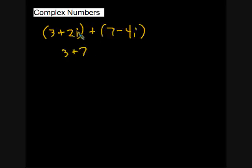And then we'll add the imaginary part plus the imaginary part. So that'll be 2i minus 4i. And what that gets us is 10 plus negative 2i.